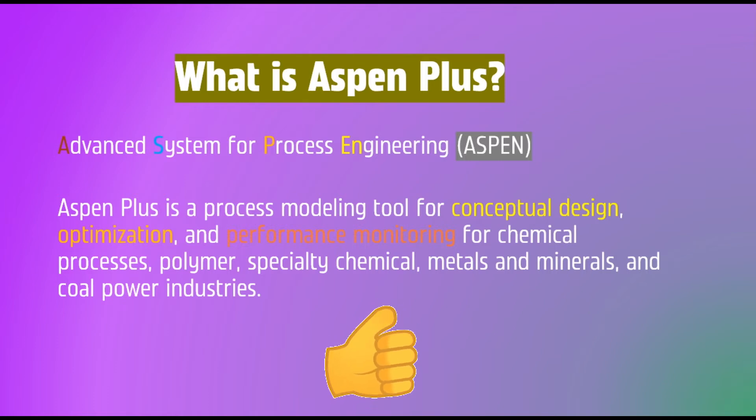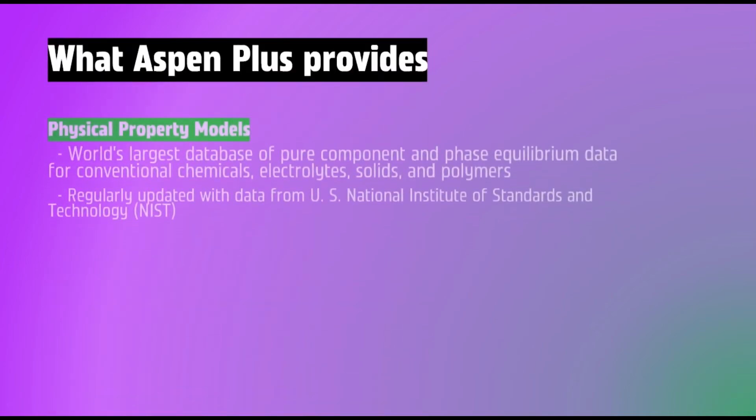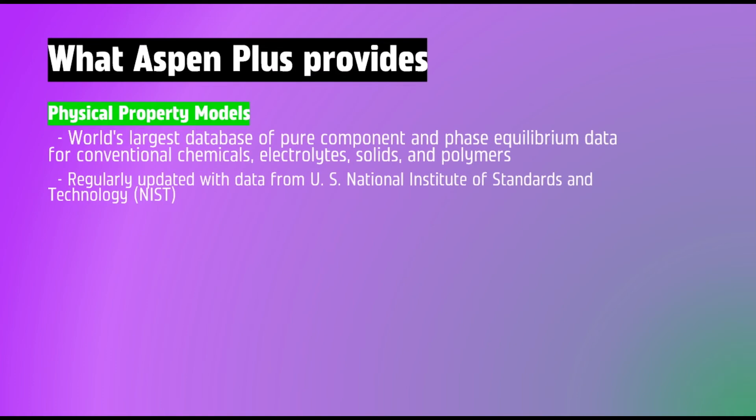So far, if you like this information, please like the video. Continuing: what does Aspen Plus provide? Number one, physical property models — the world's largest database of pure component and phase equilibrium data for conventional chemicals, electrolytes, solids, and polymers, regularly updated with data from the U.S. National Institute of Standards and Technology, NIST.